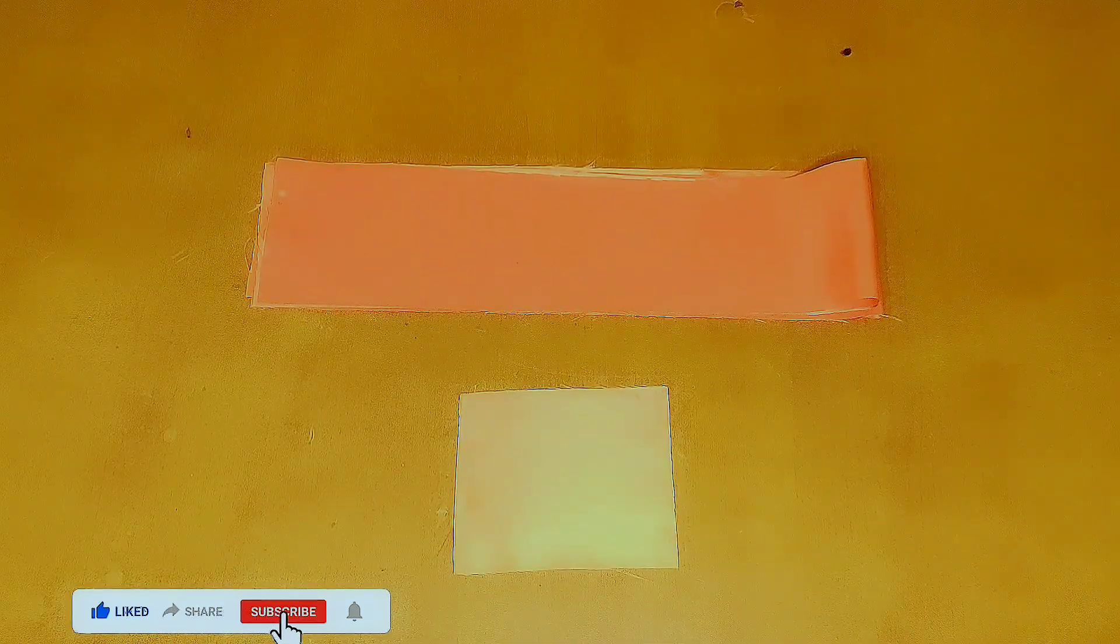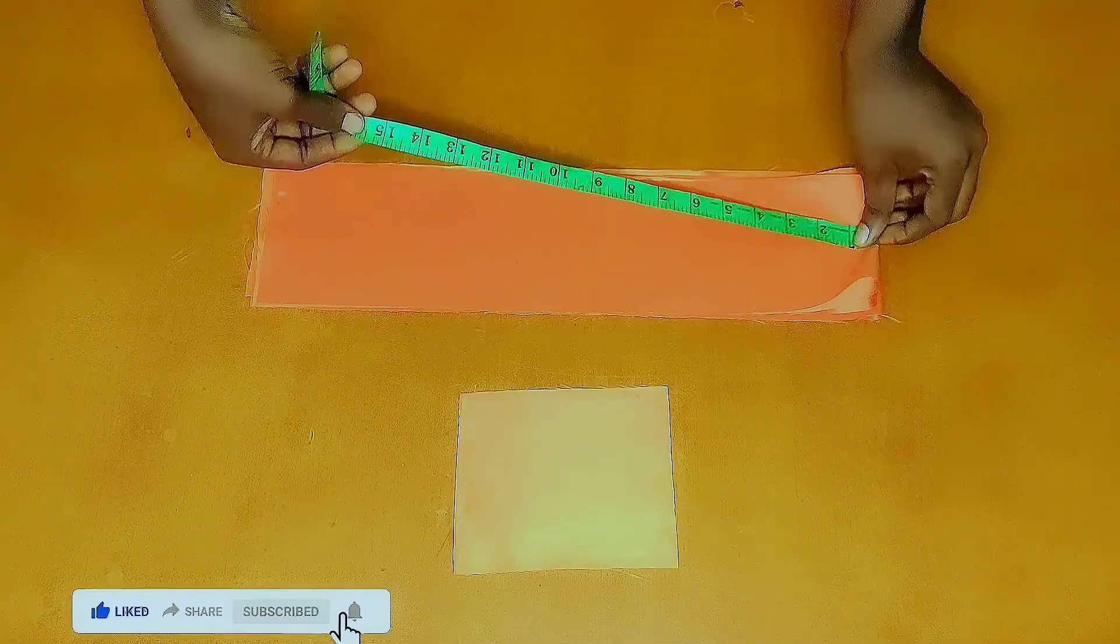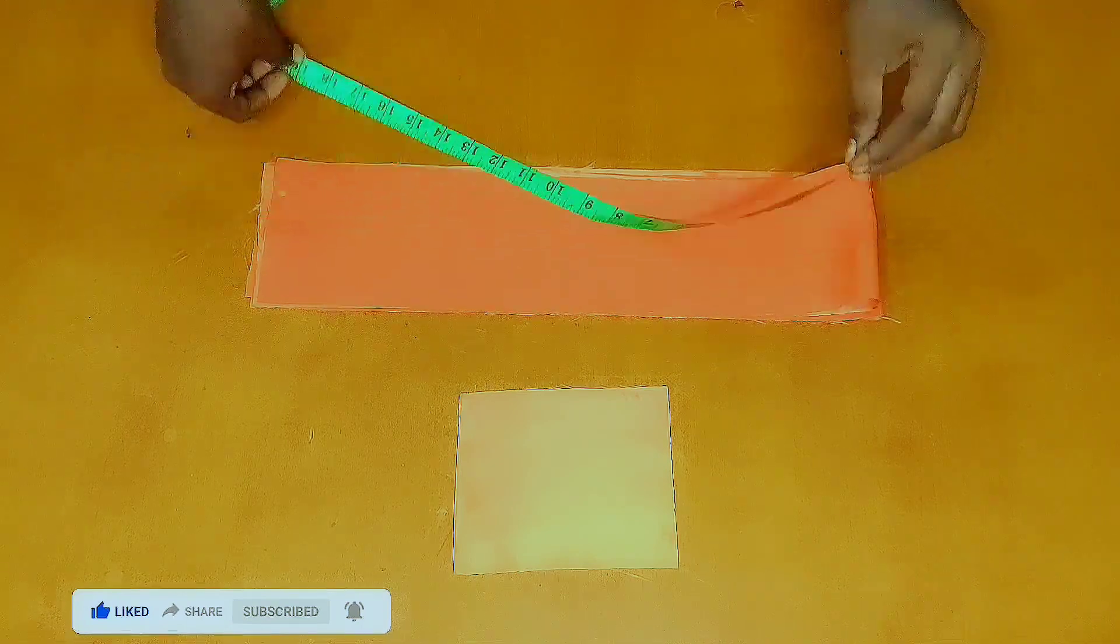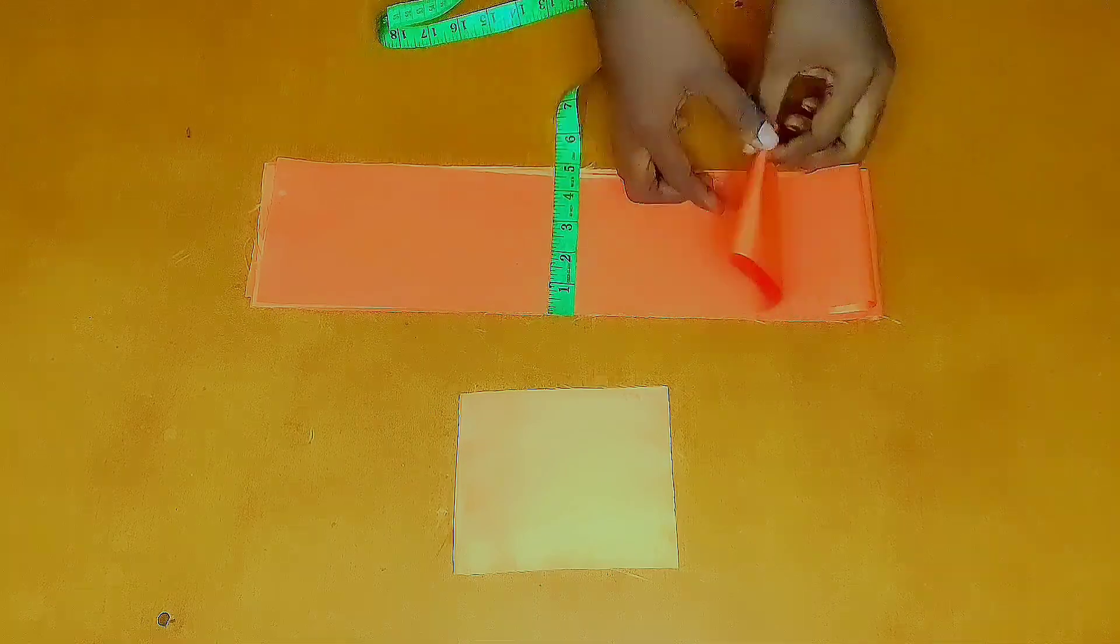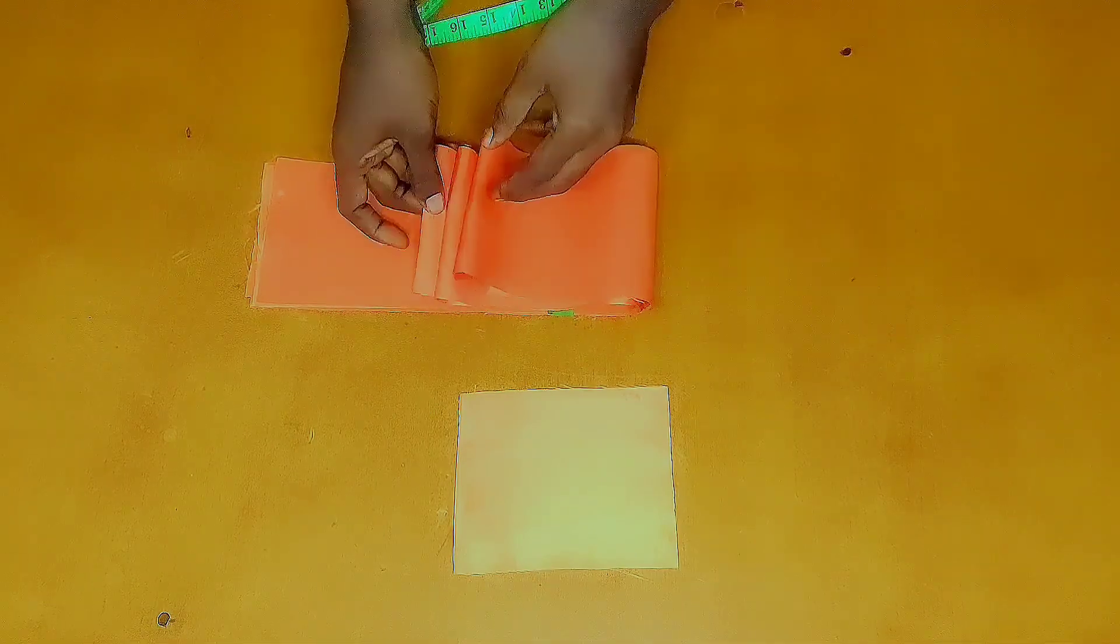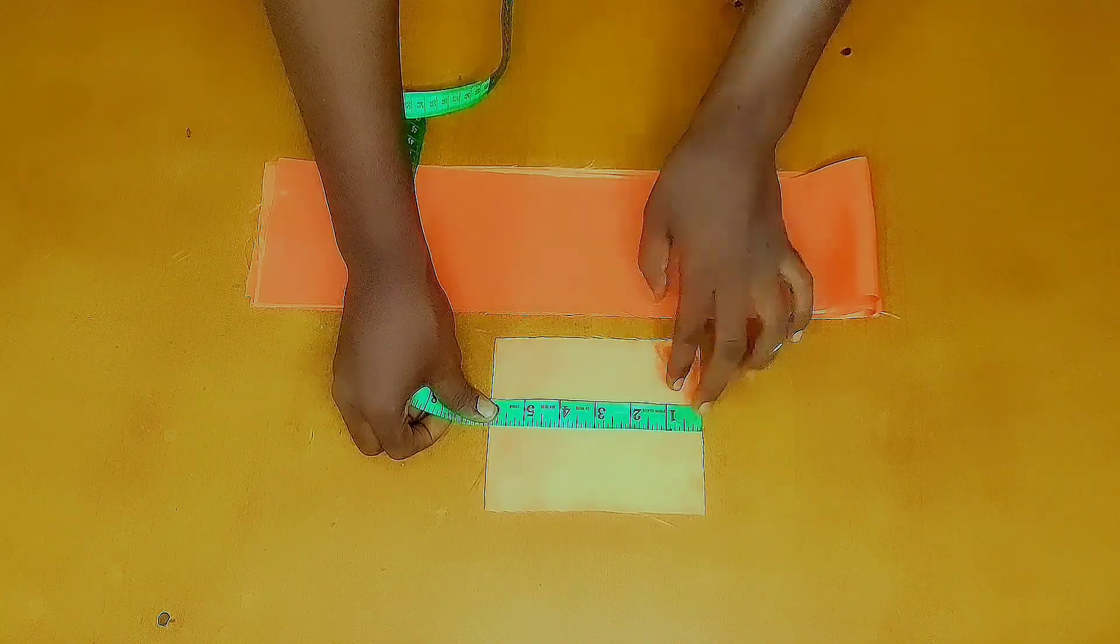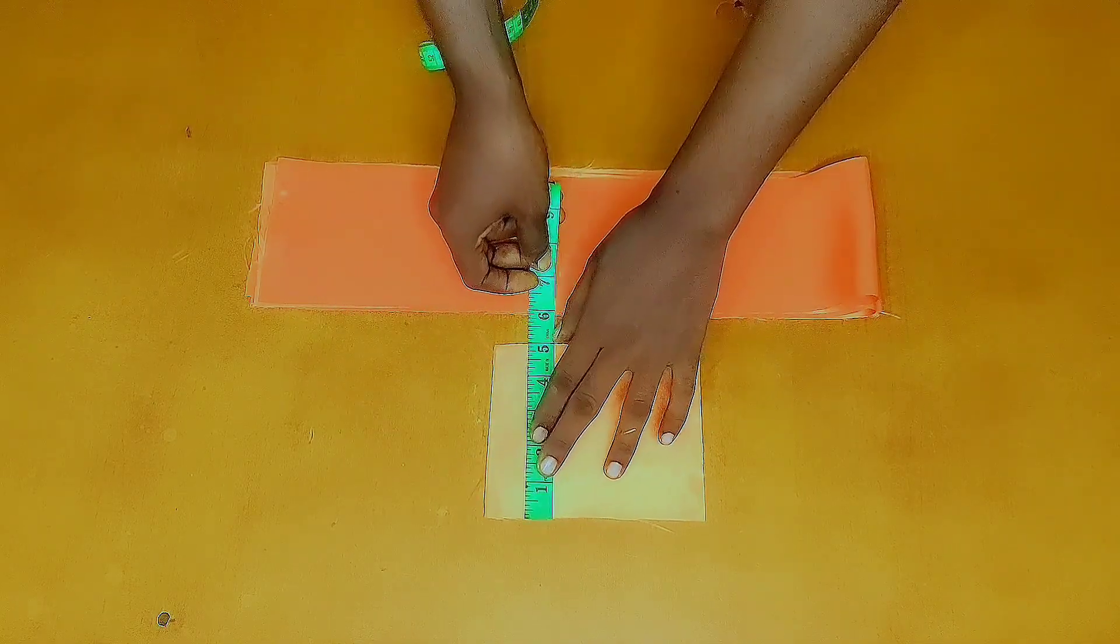For the purpose of this tutorial, I used a satin fabric. The fabric is 18.5 inches long and the width is 4.5 inches. I have 3 pieces of the longer piece. For the smaller piece, it is 6 inches long and about 5 inches wide.